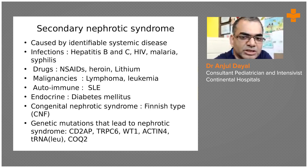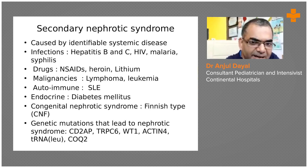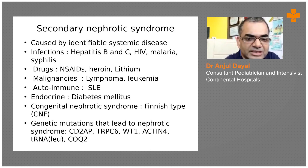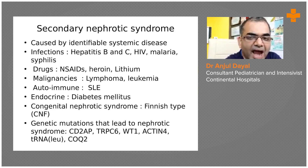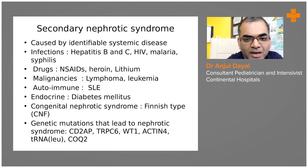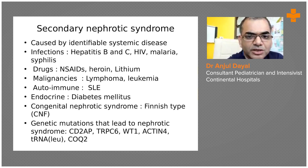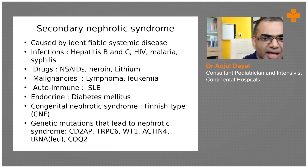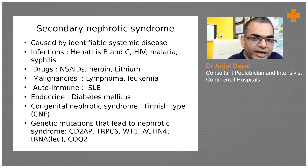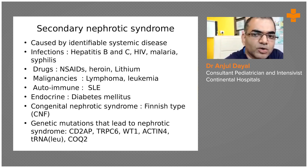Nowadays, many genetic mutations are being implicated in nephrotic syndrome. The mutations commonly mapped with recent studies are NPHS2, NPHS1, TRPC6, WT1, ACTN4, and others associated with leukemia and autoimmune diseases. It is important to look for these diseases and identify them — this helps in prognostication, understanding which children might not do well, counseling parents accordingly, and ensuring that in secondary nephrotic syndrome, the primary disease is treated.